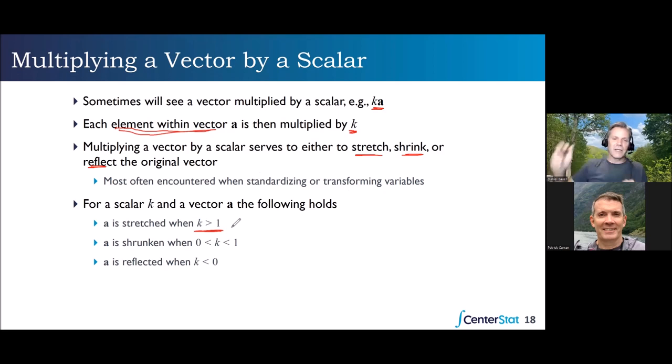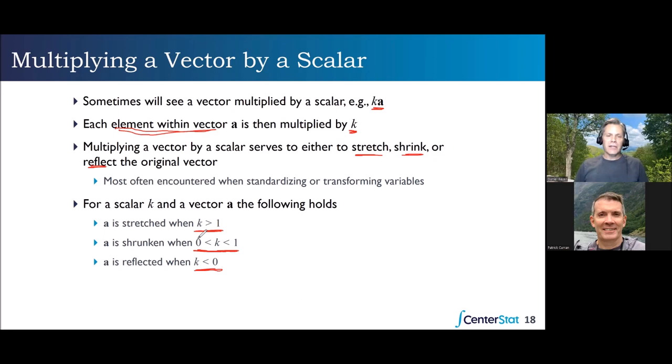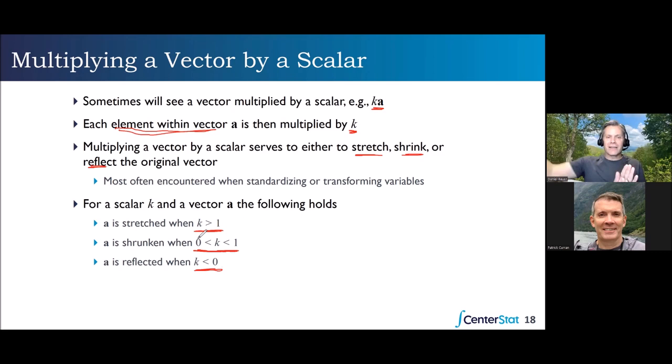If K is between zero and one, you've got a fractional value — it's going to shrink down all the elements. If K is less than zero — a negative number — it's going to reverse the vector's direction. If it's negative one, it reverses to the original length. If it's more negative than negative one, it both reflects and stretches in the opposite direction.